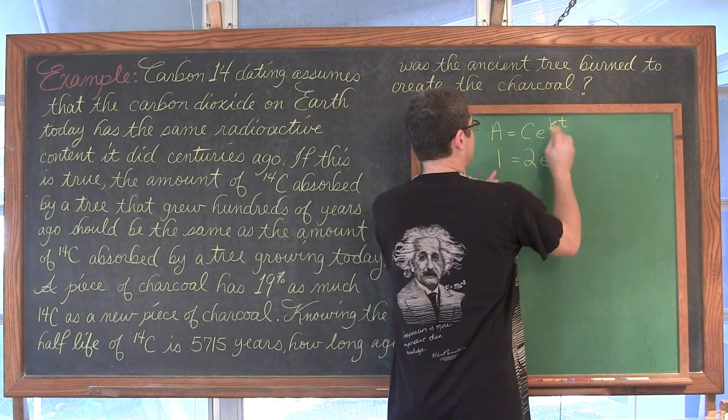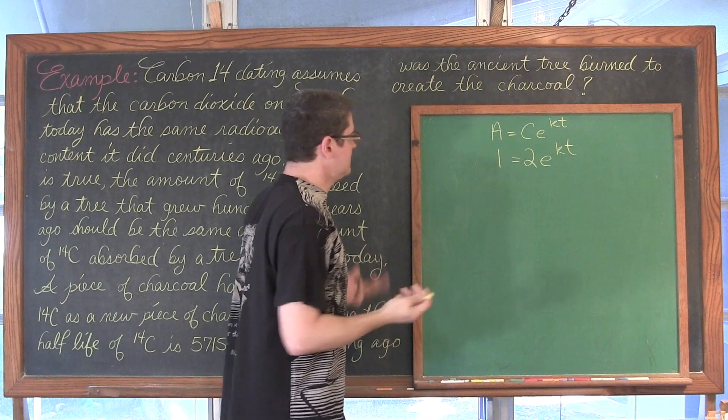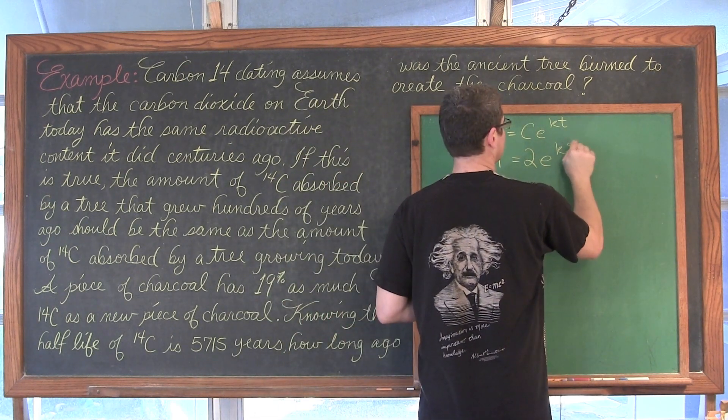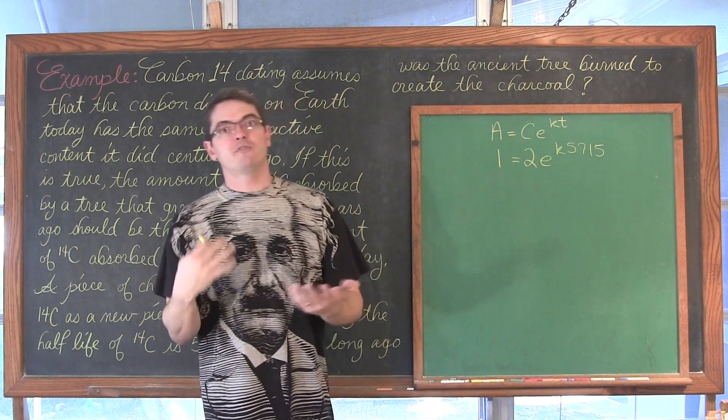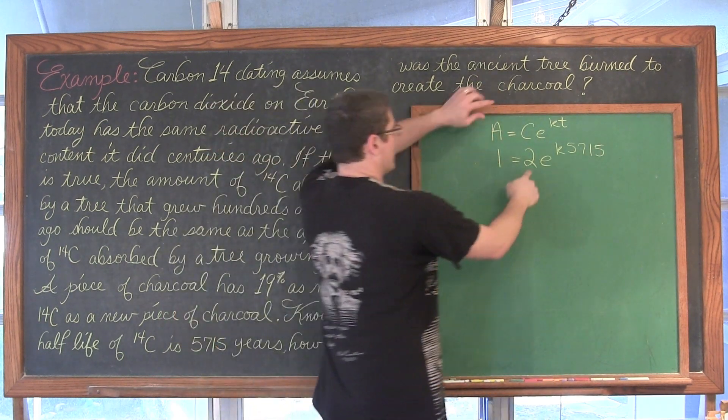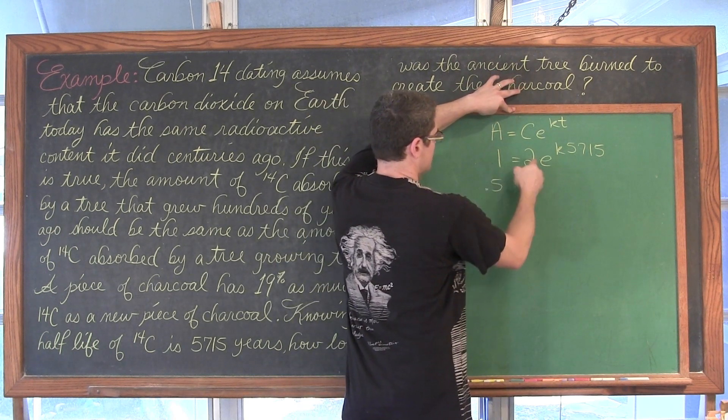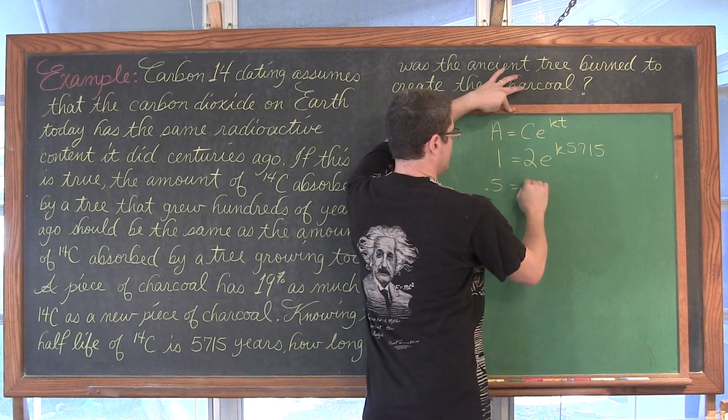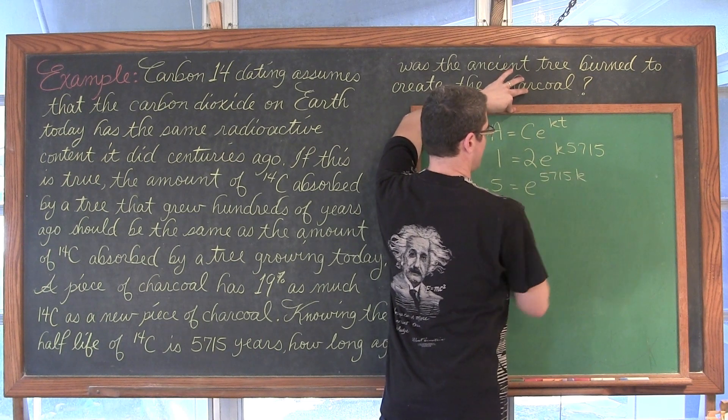We have that times e to the kt power. Actually, we know what t is, of course, right? It's 5715. Divide both sides by two and you'll see that 50% come up. I could have just said where our initial amount was one and our final amount was 0.5. Dividing both sides by two, we get 0.5 equals e to the 5715k power.